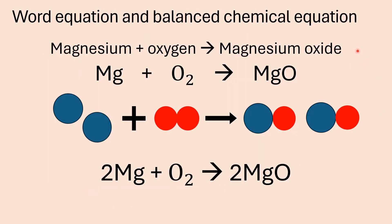It's important that you know the balanced equation, the word equation, and the pictorial equation for the reaction of magnesium with oxygen. The word equation is: magnesium plus oxygen forms magnesium oxide. The symbol for magnesium is Mg, oxygen gas is O2, and the formula for magnesium oxide is MgO. To balance the particles, you need two magnesium atoms to react with one oxygen molecule to form two magnesium oxide formula units. So the balanced chemical equation is: 2Mg + O2 → 2MgO.